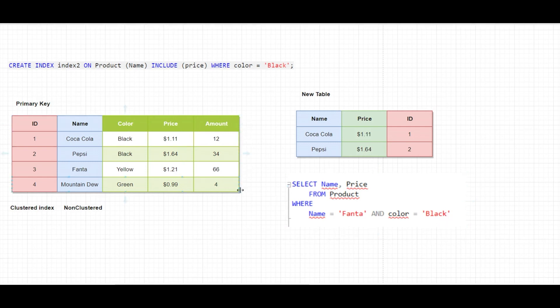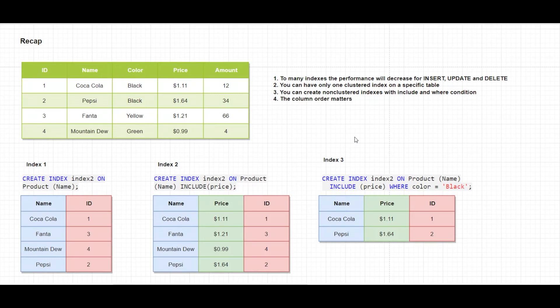Let's recap what we learned. If you have too many indexes on a specific table, the performance will decrease for INSERT, UPDATE, and DELETE. You can have only one clustered index on a specific table. You can create non-clustered indexes with INCLUDE or a WHERE condition. Column order matters — if you create a non-clustered index for two columns like color and price, it matters which one is first. You can also specify ascending or descending order for each column.